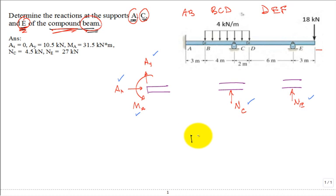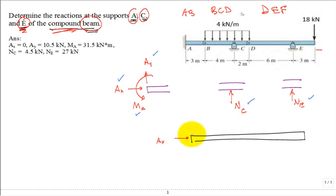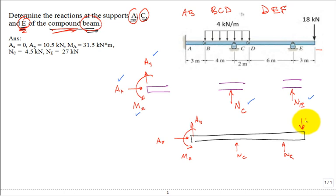I can draw a free body diagram of the entire system — cutting it free gives me A_x, A_y, M_A, N_C, N_E, the 18 kN point load, and the distributed load. Right away I want to convert that distributed load into a single equivalent point load. This one is easy — it's rectangular, not trapezoidal or triangular.